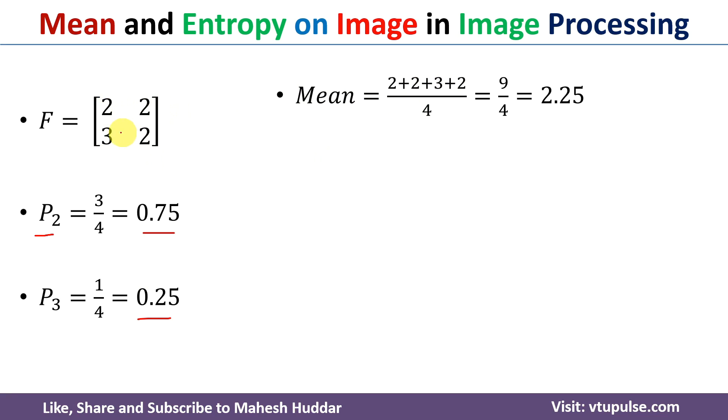So in this case, 2 plus 2 plus 3 plus 2 divided by the number of pixels, which is 4. If you solve this, you will get 9 by 4, which is equivalent to 2.25.